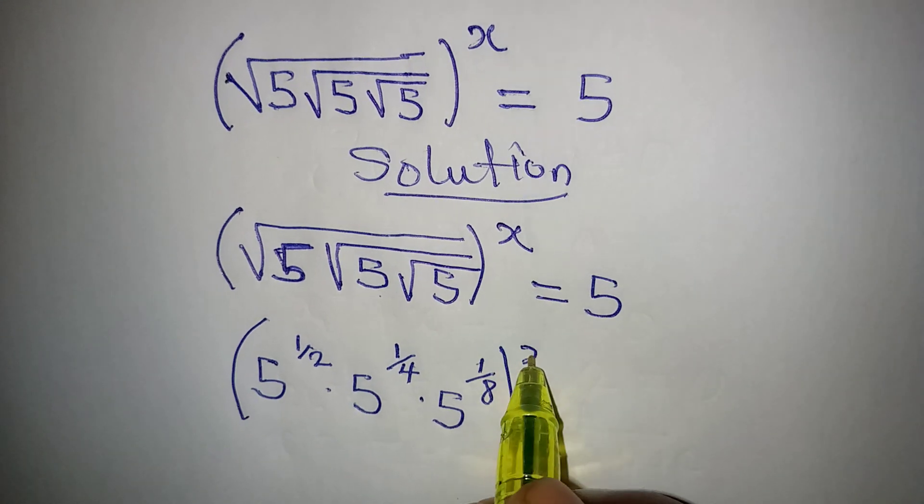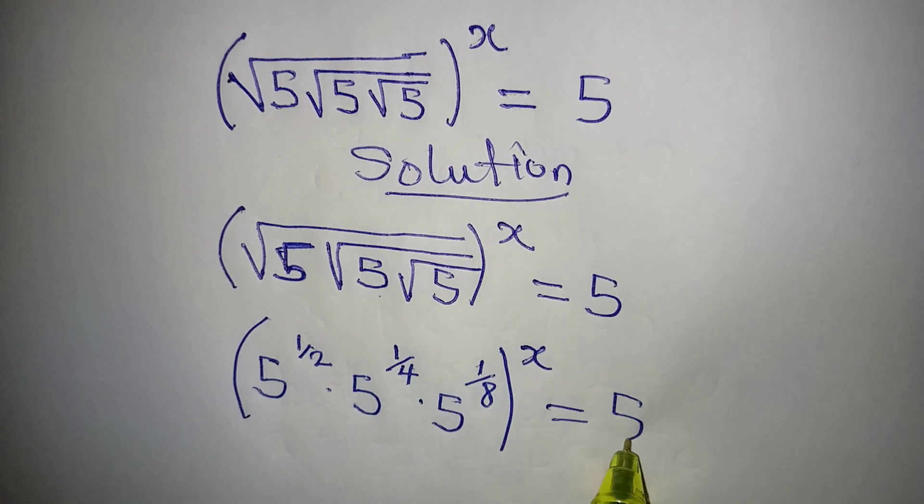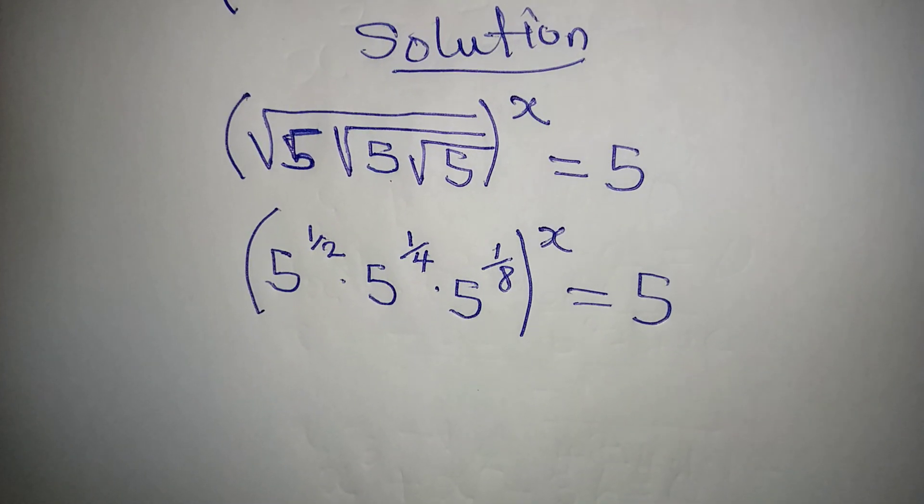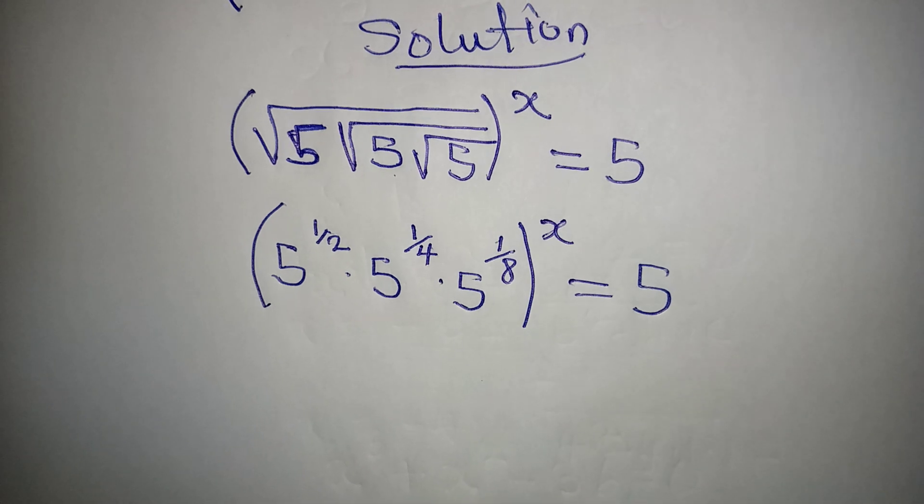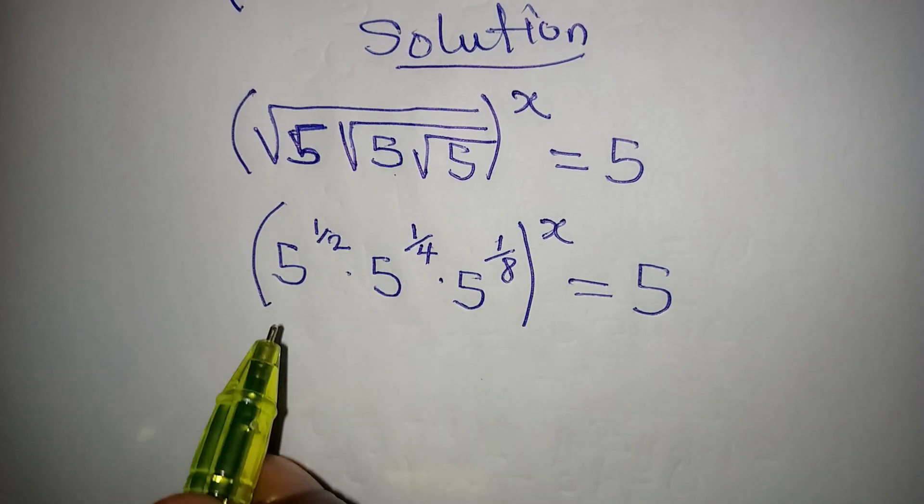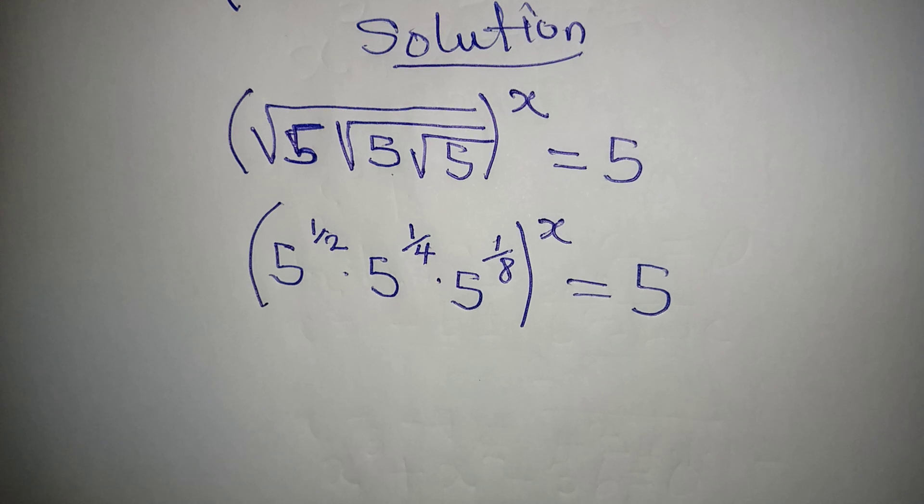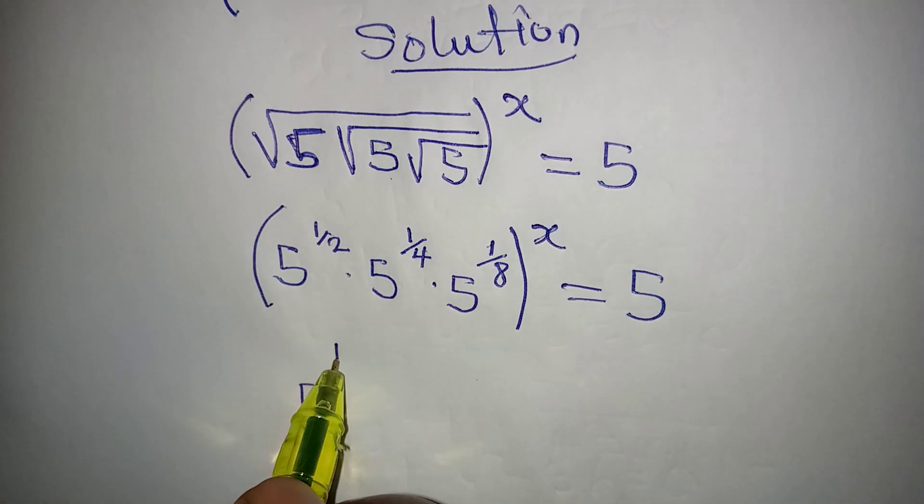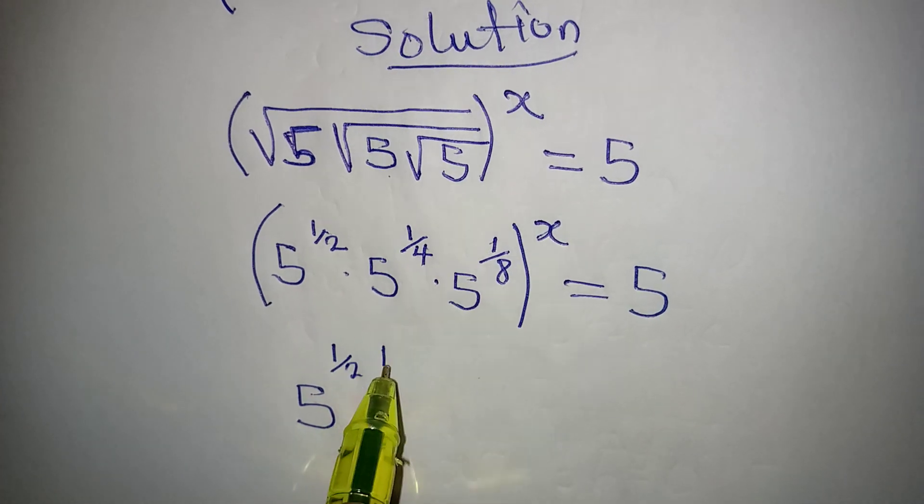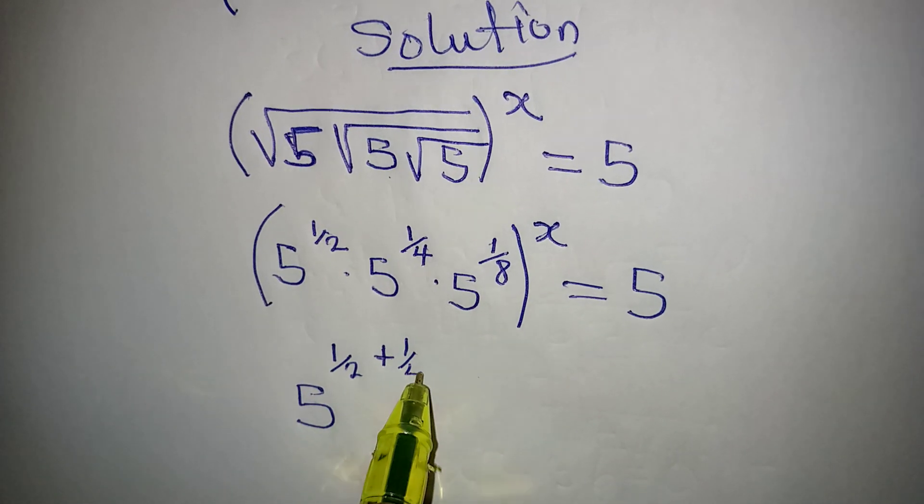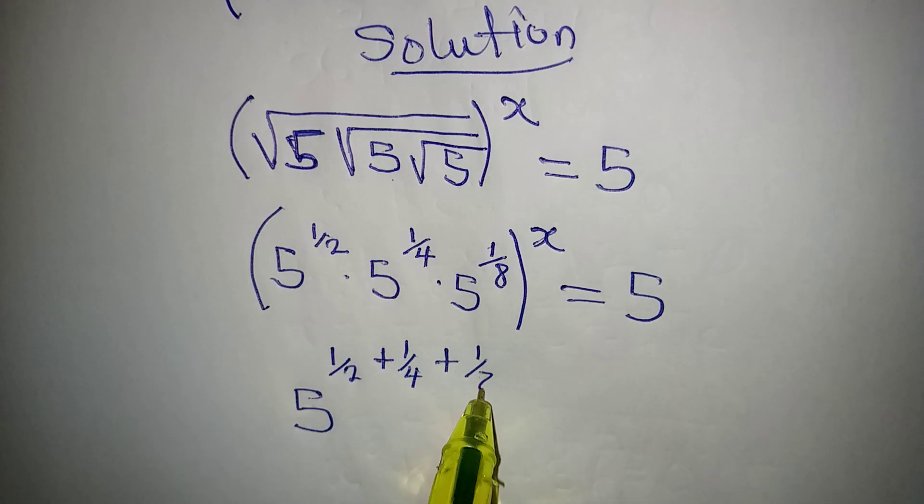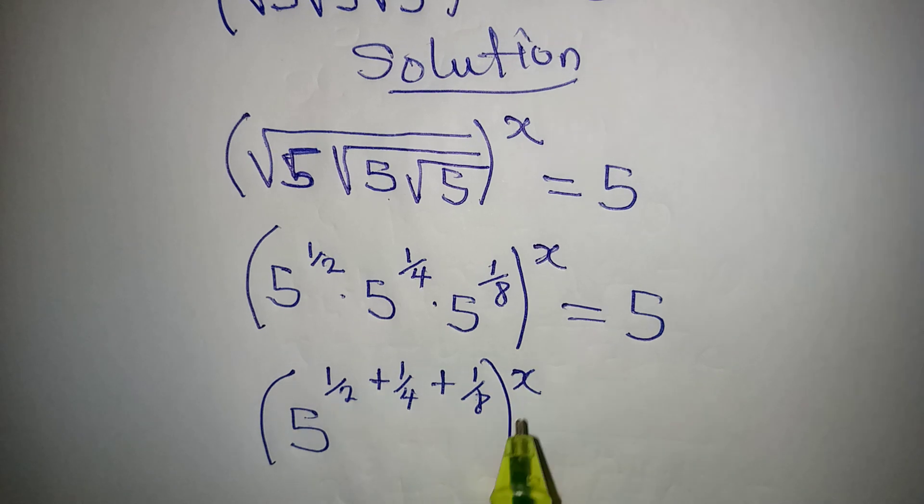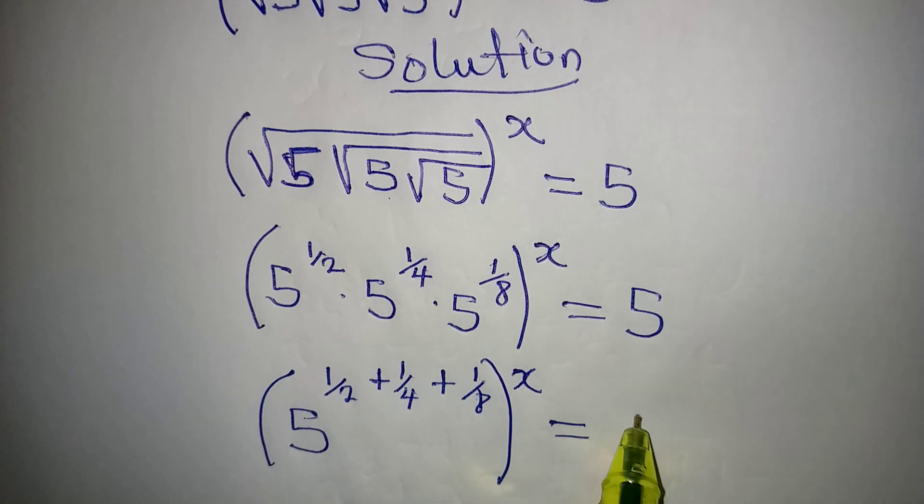Then the whole of this is now to the power of x and it is equal to 5. Now what do I do? I'm going to obey one of the rules of indices and it says if you have the same base, pick one of them and add the powers. So I'm going to pick 5 as the base and I will add 1 over 2, 1 over 4, and 1 over 8, but remember that this is to the power of x which is equal to 5.